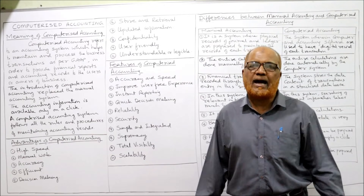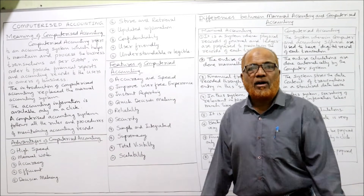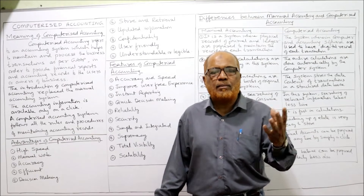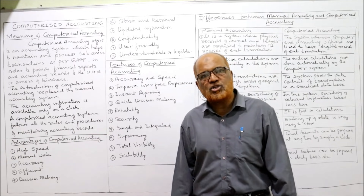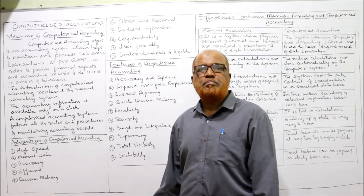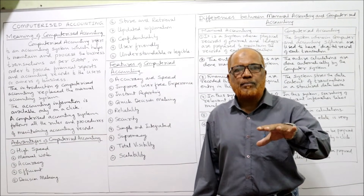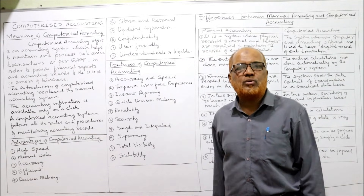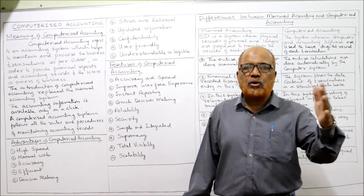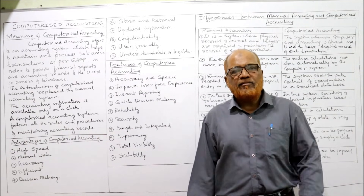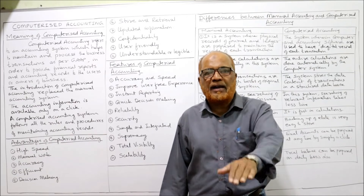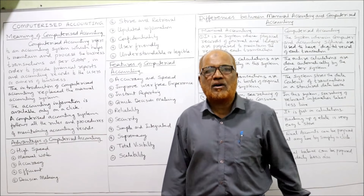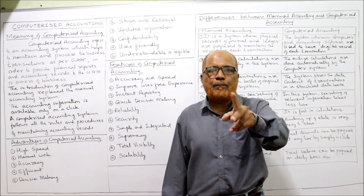There are many advantages of computerized accounting, which is why it is widely used in every business. The first advantage is high speed — a large volume of transactions can be easily processed with the help of computers, much faster than manual accounting. The second advantage is reduced manual work — when using computerized accounting, human effort is reduced, less paperwork is required, and manual work is significantly decreased.